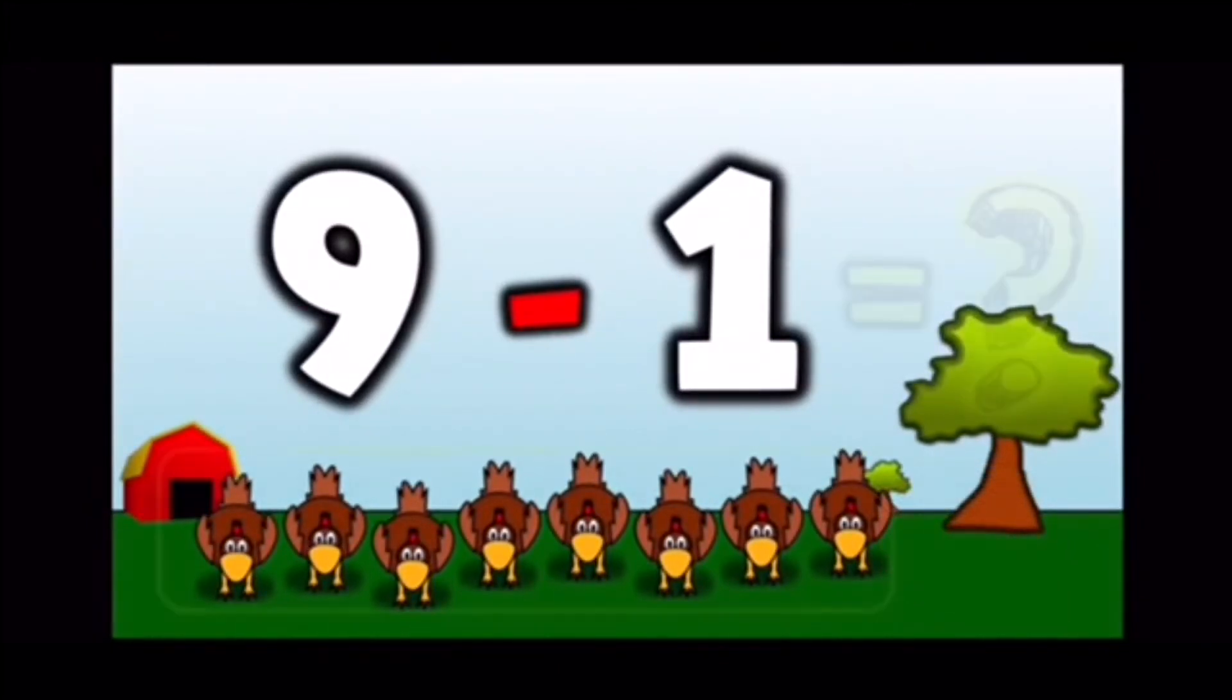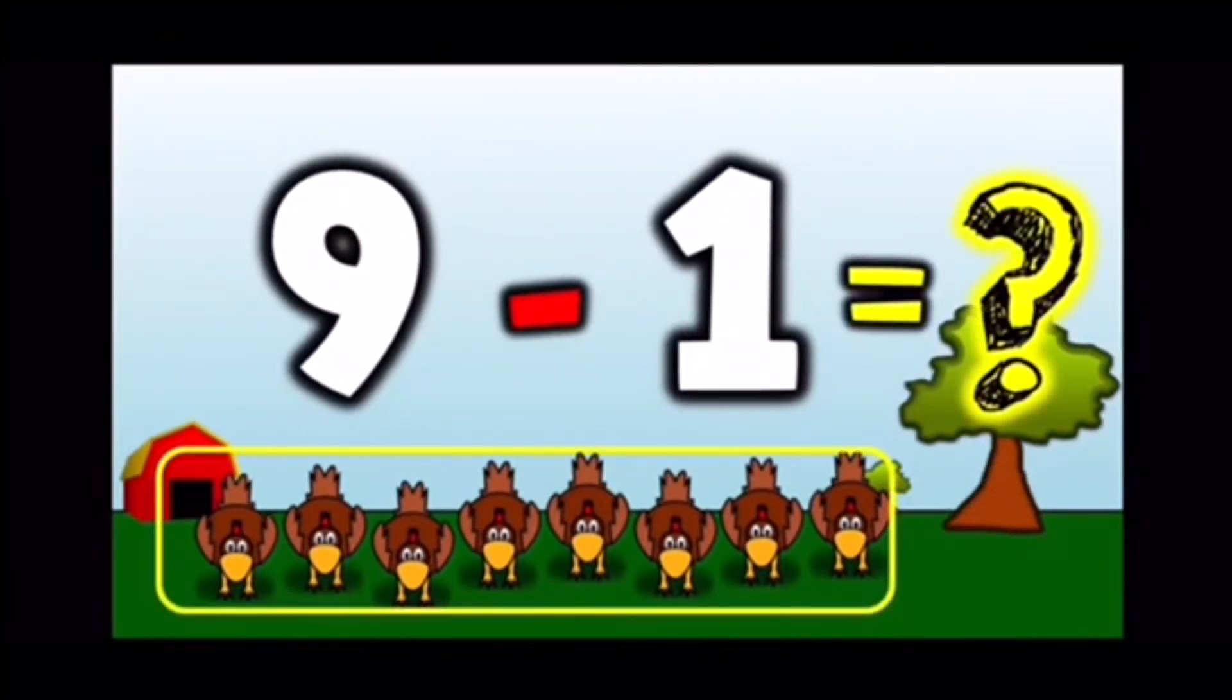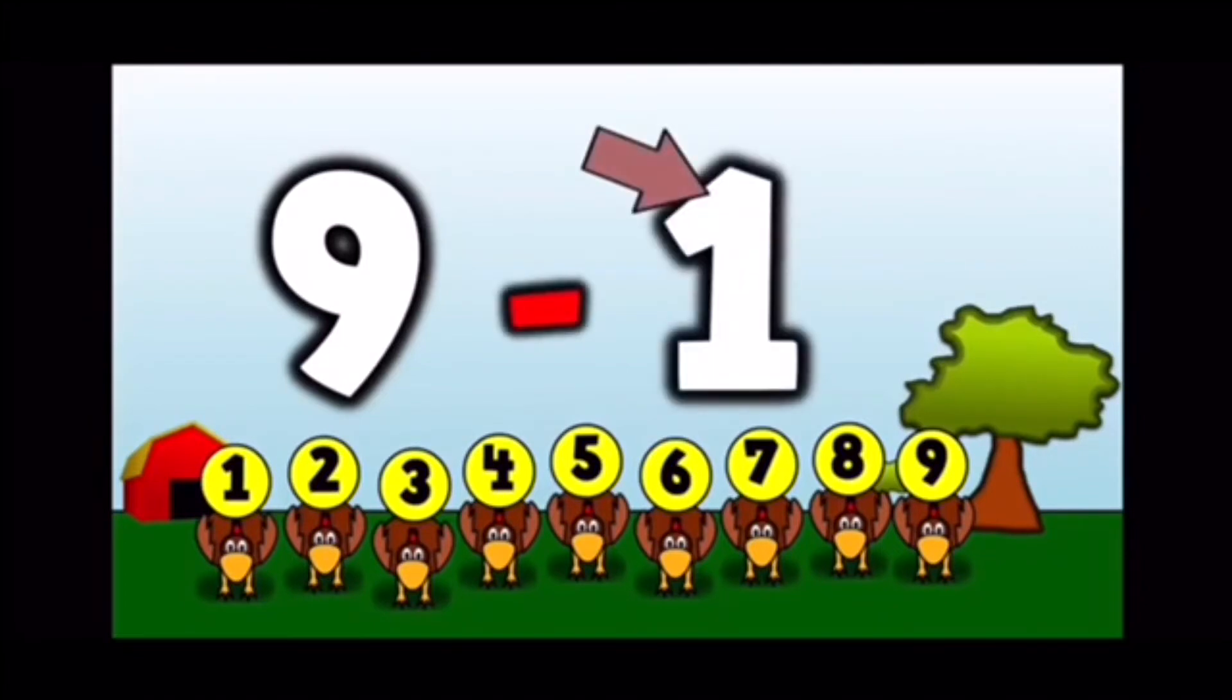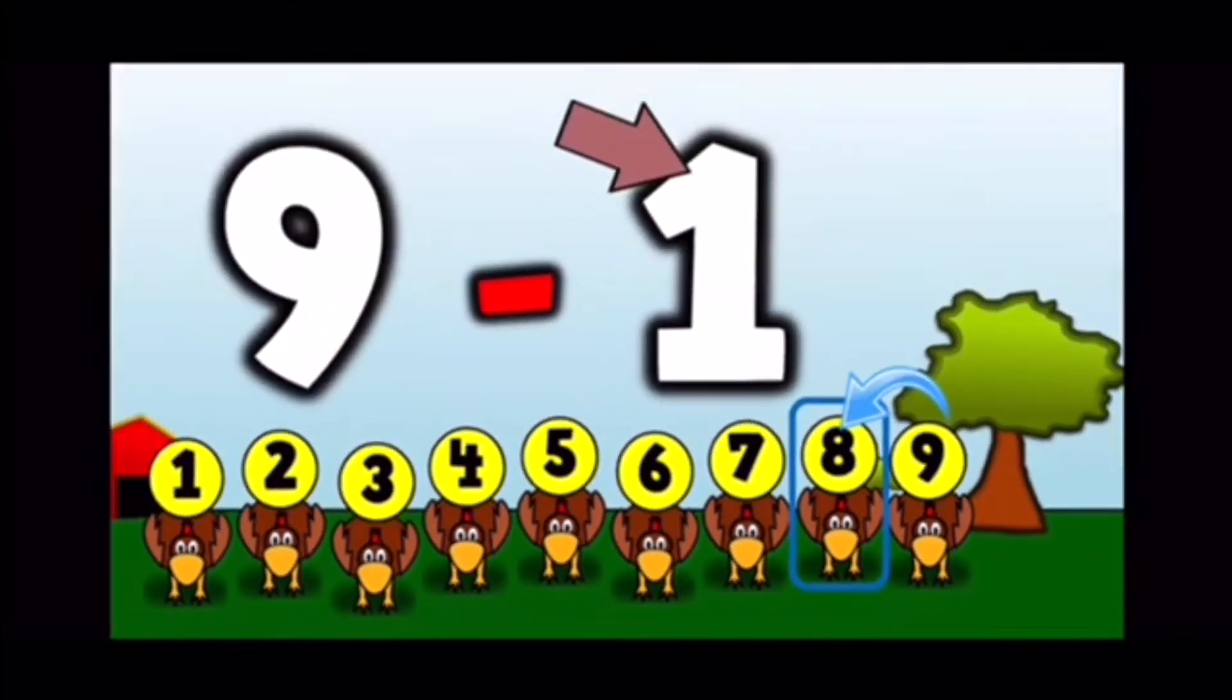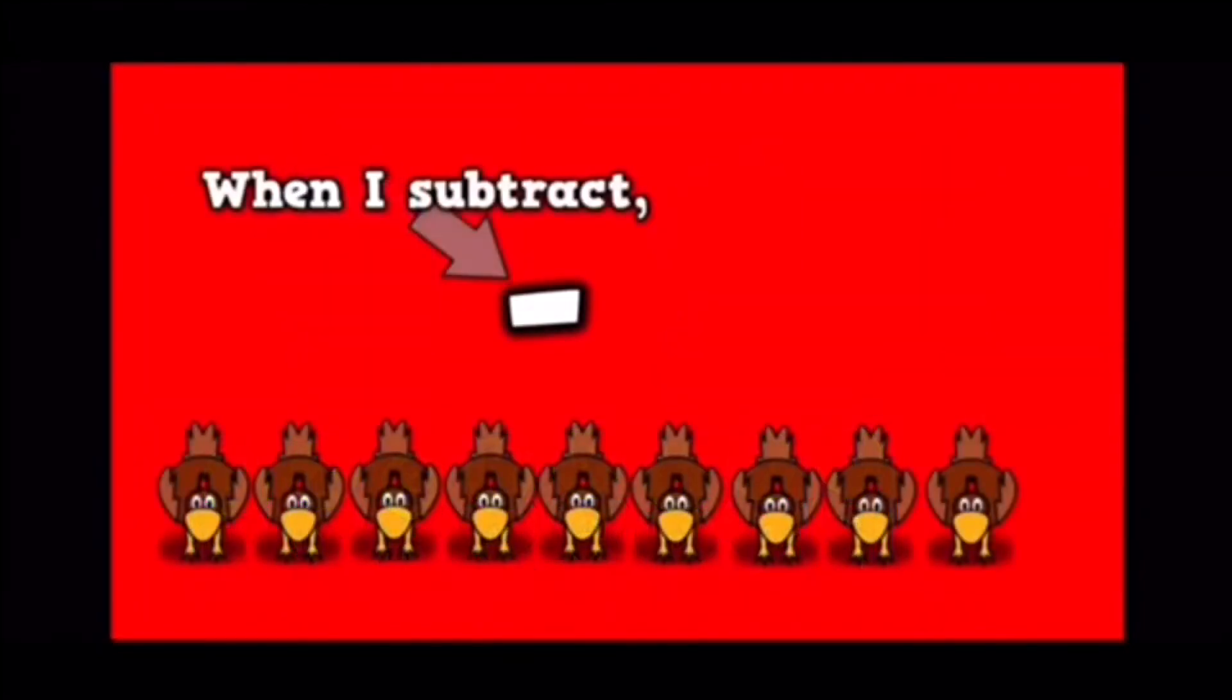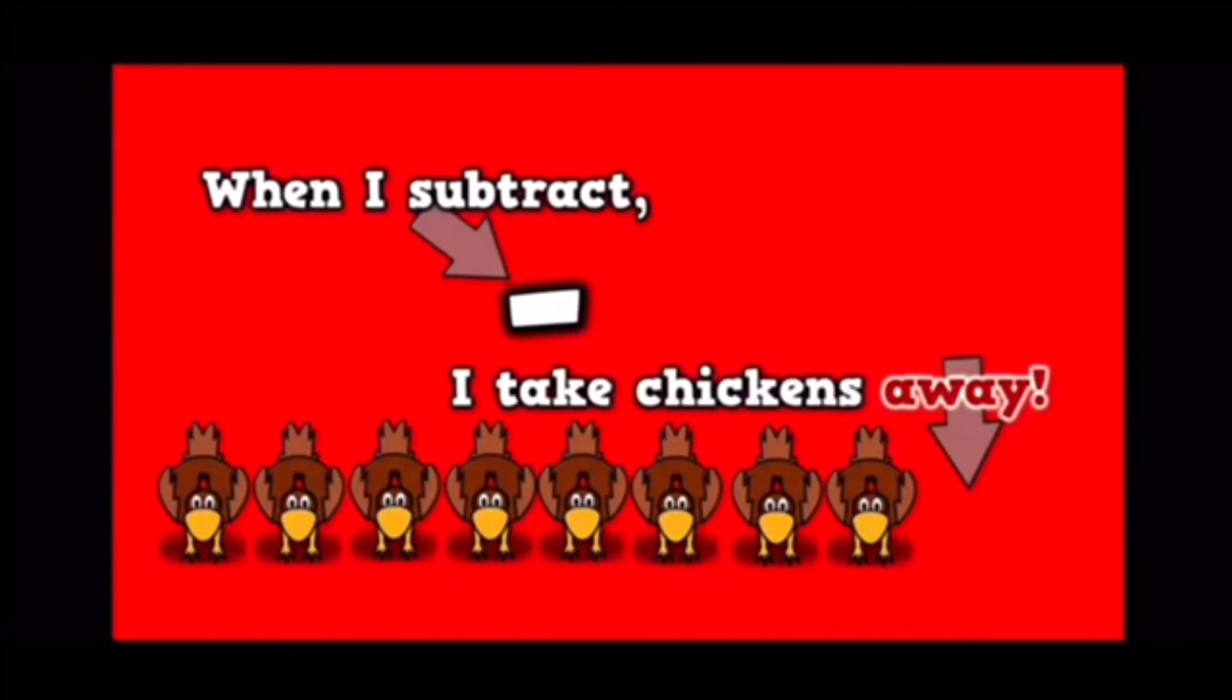Well, how many chickens were left over on the farm? Well, I know I started with nine chickens and I know if I subtract one that means I'm going to go one number before nine. Let's see what that number is. Oh that's right, that's the number eight. So nine minus one equals eight. When I subtract, I take chickens away.